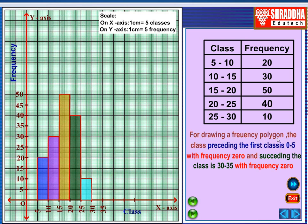For drawing Frequency Polygon or Frequency Curve, the class preceding the first class is 0 to 5 with Frequency 0. And, succeeding the class, here 30 to 35 with Frequency 0. That is, preceding class having Frequency 0 as well as succeeding class having Frequency 0.